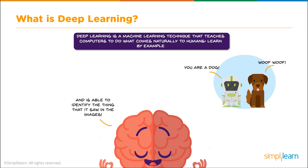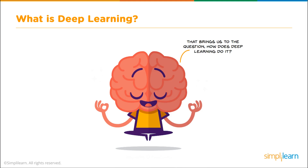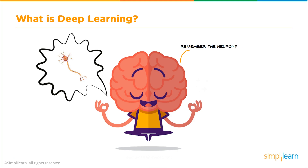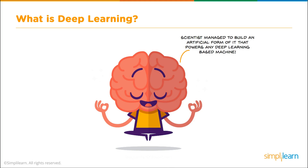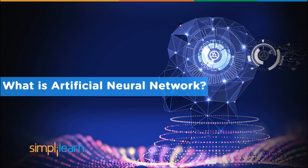You put things into the program, it starts running the deep learning, and you have to understand those settings — but you don't have to follow exactly what's going on inside the deep learning model. How does deep learning do it? Remember the neuron? Scientists managed to build an artificial form of it that powers any deep learning based machine. So let's talk about artificial neural networks.